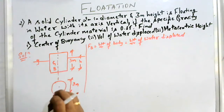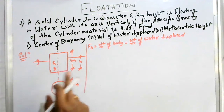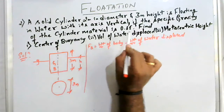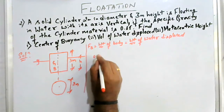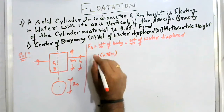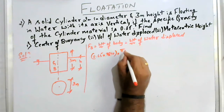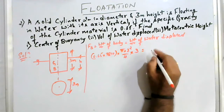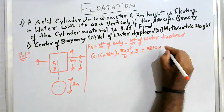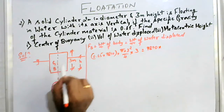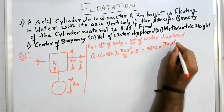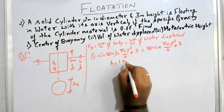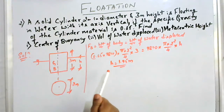The force of buoyancy equals the weight of the body, which equals the weight of water displaced. The weight of the body is gamma of the body multiplied by volume of the body. In the problem, specific gravity of the cylinder material is 0.65, so density of the material becomes 0.65 × 9810, multiplied by volume pi·d²/4 × height of 3 meter. This equals gamma of water, 9810, times volume of immersed part pi·d²/4 × h. Simplifying gives depth of immersion h equal to 1.95 meter.